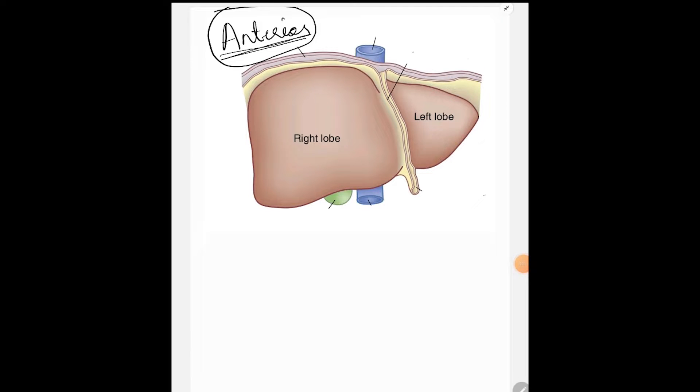This is an anterior view of the liver. In the anterior view of liver, you can see the anterior surface of the right lobe of liver and the left lobe of liver because it is separated by this structure.